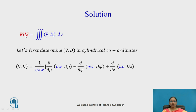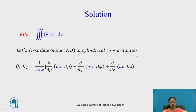Now the RHS is the volume integral of del dot D-bar dV, or the triple integral of del dot D-bar dV. There are two things to handle: the volume integral and del dot D-bar. Before going to the volume integral, let us first determine del dot D-bar in cylindrical coordinate system, because the given D-bar is in cylindrical coordinate system.